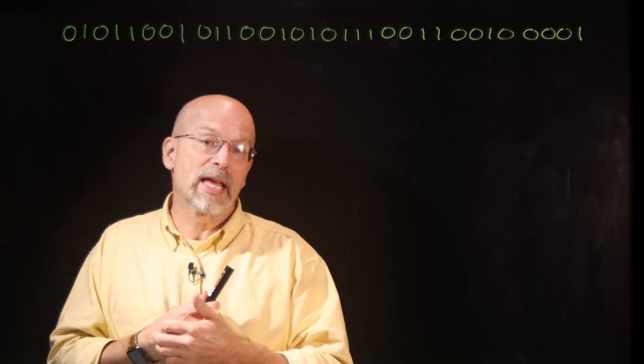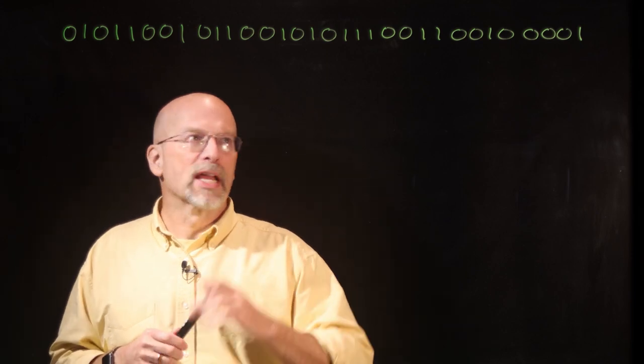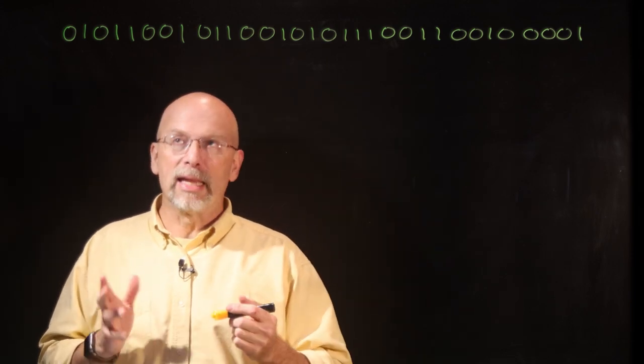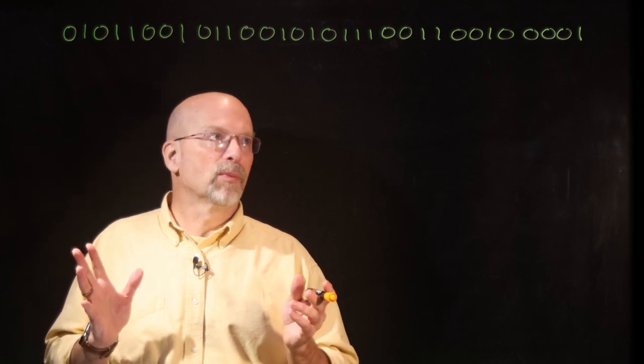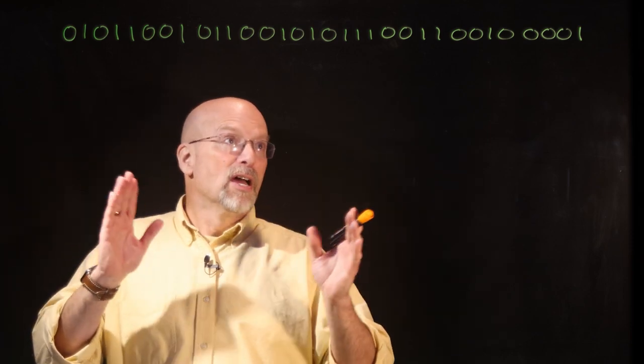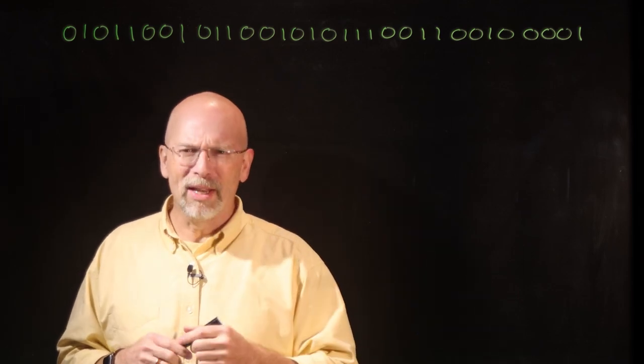Heck, it could equal an instruction to be executed by the processor. But let's say that this is a value, data, something being stored. These 32 bits could be unsigned binary. If they're unsigned binary, the value could be all the way up to 2 to the 32 minus 1, a really, really big number.